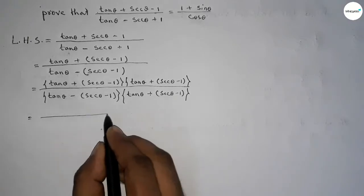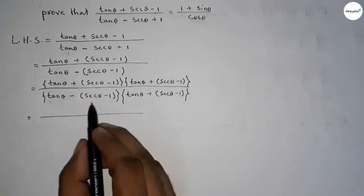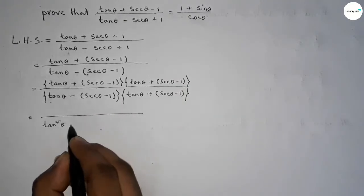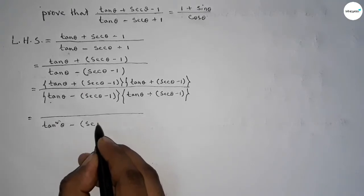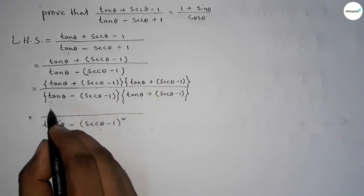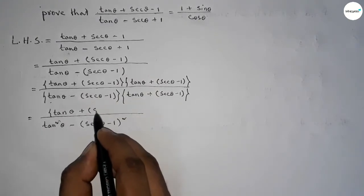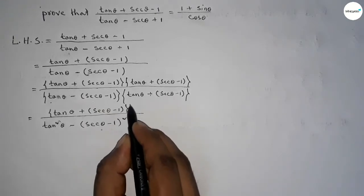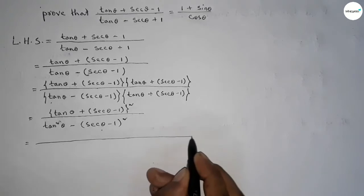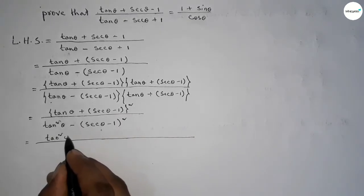The lower part follows the formula (a - b)(a + b) = a² - b². So the denominator becomes a² - b², and the numerator becomes (a + b)² whole square, where a equals tan θ and b equals (6θ - 1). Applying the formula (a + b)² = a² + 2ab + b².